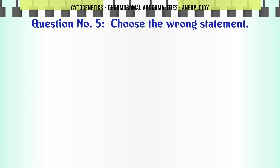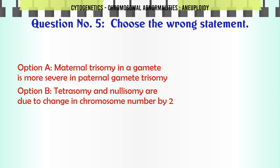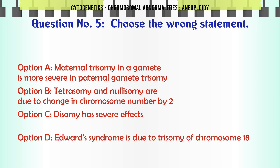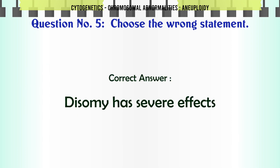Choose the wrong statement: a. Maternal trisomy in a gamete is more severe than paternal gamete trisomy. b. Tetrasomy and nullisomy are due to change in chromosome number by 2. c. Dysomy has severe effects. d. Edwards syndrome is due to trisomy of chromosome 18. The correct answer is: Dysomy has severe effects.